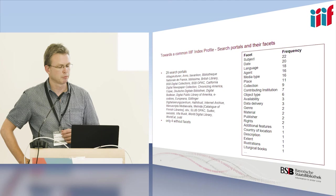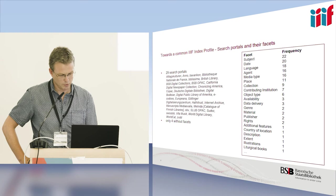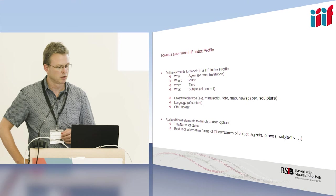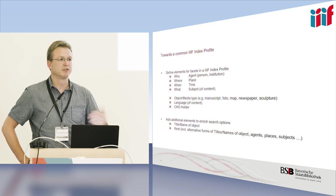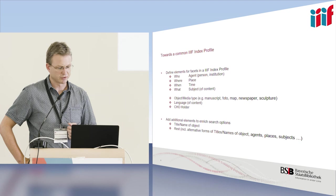We looked at some of the search portals that are out there and saw that regarding facets, there are some facets widely used and others not so widely. This could be the starting point for this common IIIF index profile — to have buckets for who, where, when, and what. Interesting facet candidates include object or media type, language, the holder of the cultural heritage object, and so on. And besides the facets, you need other elements to feed your index too, such as alternative forms of names and titles.